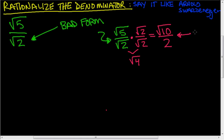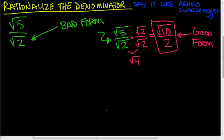This is in proper form — this is how the answer should be written. No square root on the bottom, square root on the top. The square root of 5 over the square root of 2 is exactly the same as the square root of 10 over 2. This is called rationalizing the denominator — making the bottom just a whole number. We do that by multiplying by whatever the denominator is, top and bottom. The square roots cancel, and you figure out what you get on the top.